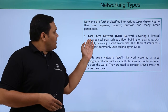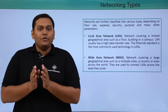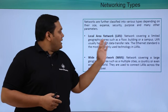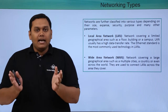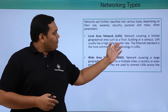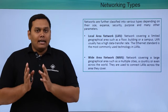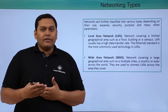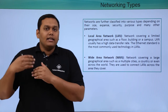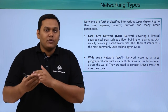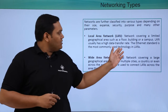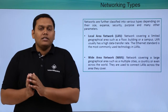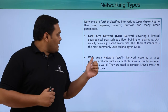The first one is Local Area Network, which we call LAN — a network covering a limited geographical area such as a building, a floor, or a campus. LAN usually has a high data transfer rate, and Ethernet channels are most commonly used in this technology.